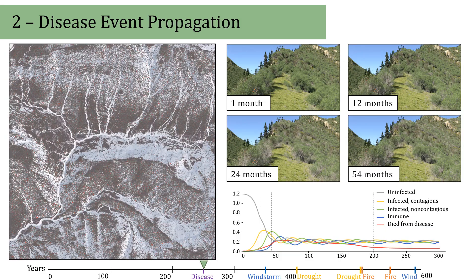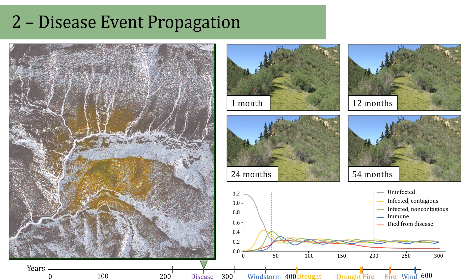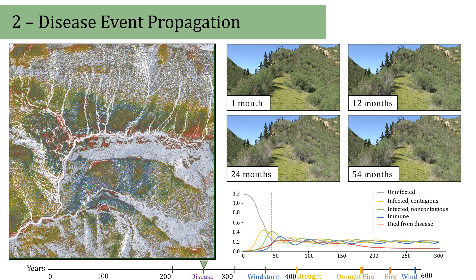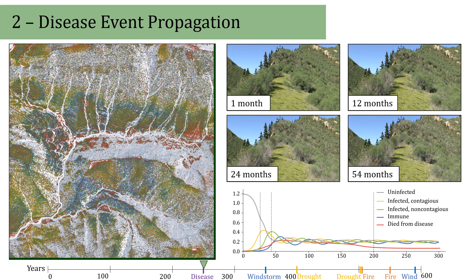The disease progression shows a typical surge in initial infection and death, with subsequent waves that gradually damp down to an endemic.